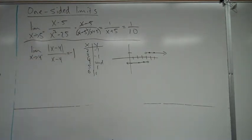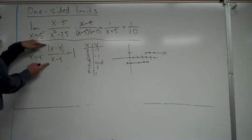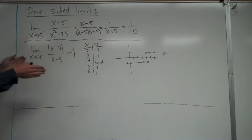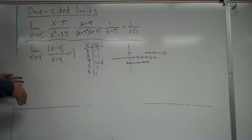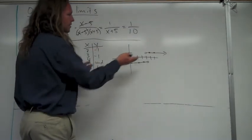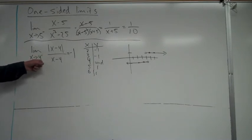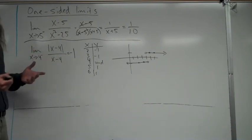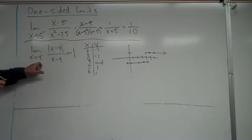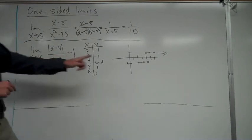You probably don't want to draw a graph every time. Get used to this format — if you see something like absolute value of (x minus 2) over (x minus 2), or absolute value of (x plus 7) over (x plus 7), they all have graphs that look similar and just split at different points. Since x is approaching 4 from the left, I plug in a value like 3, get negative 1, and that's my limit.